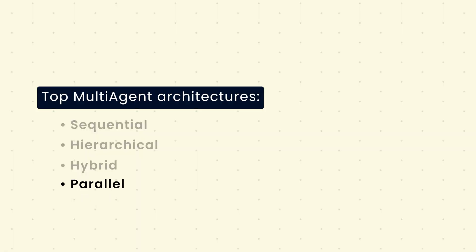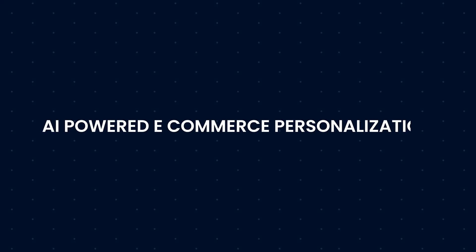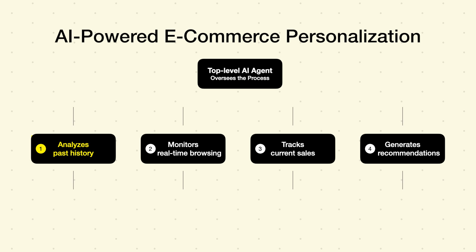The fourth type is parallel agents, where multiple agents work independently on different tasks simultaneously, speeding up the process. For example, in an AI-powered e-commerce personalization service: agent 1 analyzes a customer's past purchase history, agent 2 monitors real-time browsing behavior, agent 3 tracks current sales and discounts, and agent 4 generates a personalized product recommendation list.